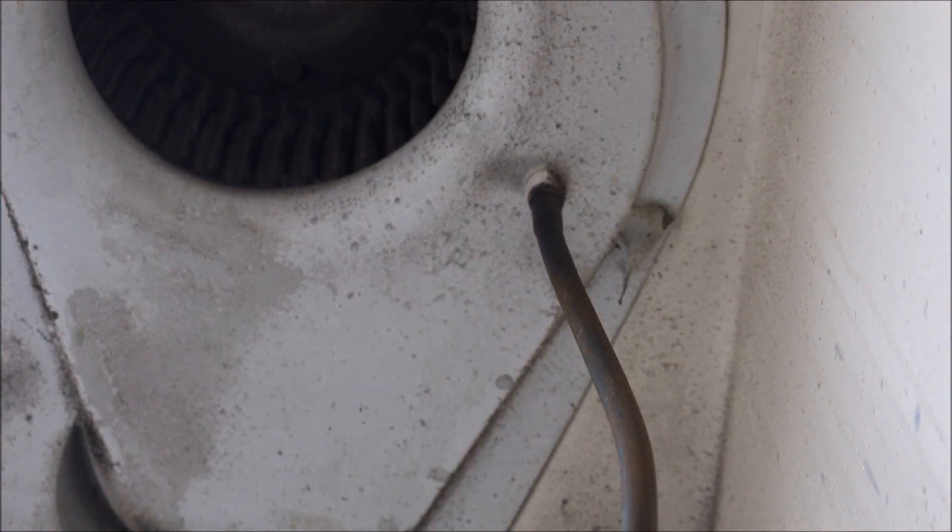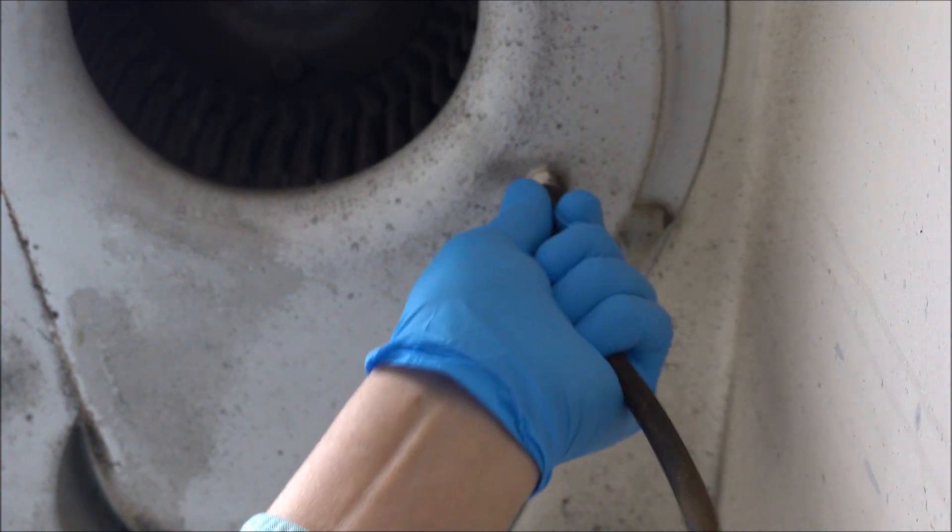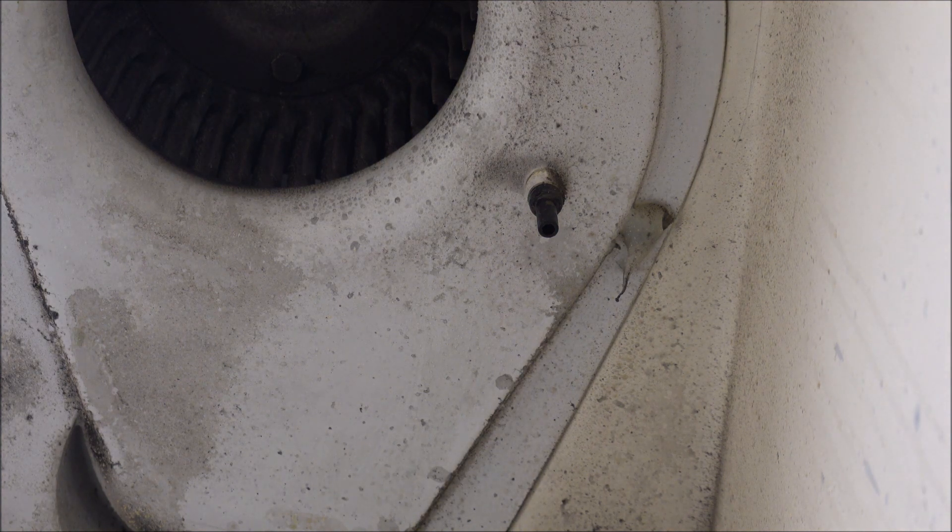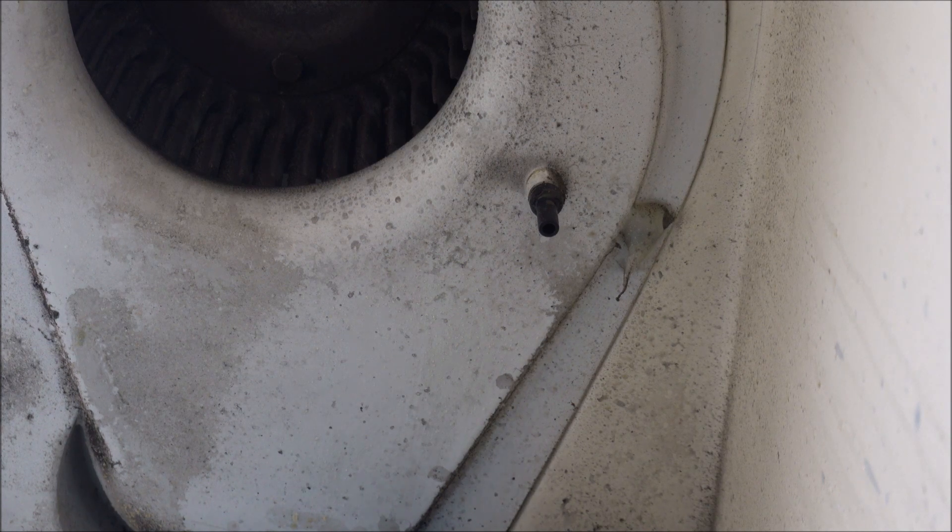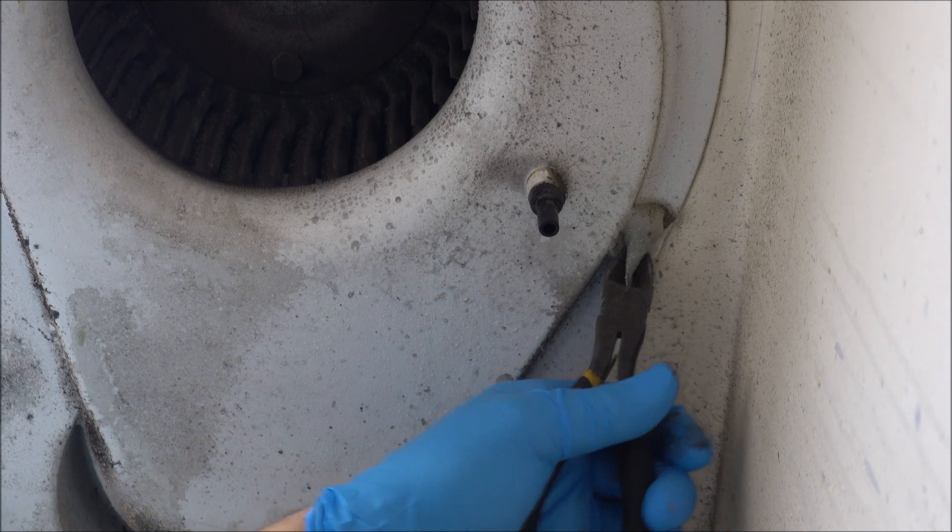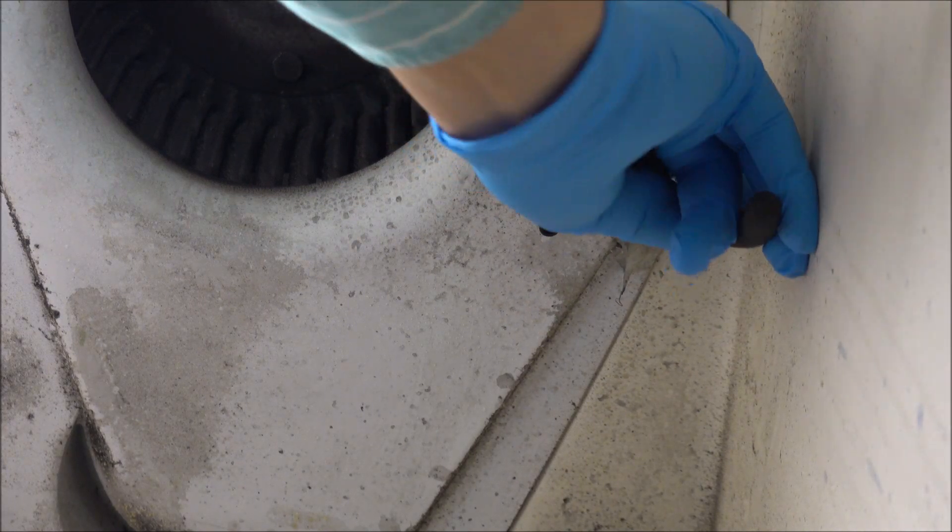This is the bottom of the fume hood looking up. I'm going to disconnect the little drain hose here that drains any rainwater that comes down the stack out. Now what we need to do is take the protective coating off of these screws up here.